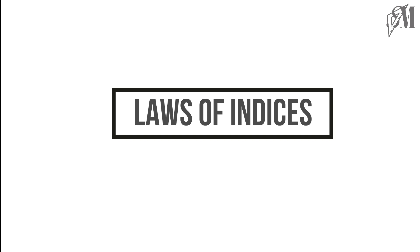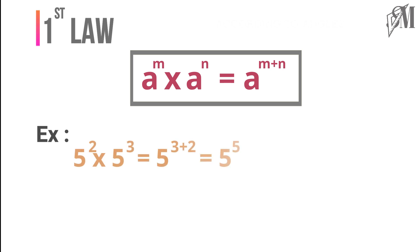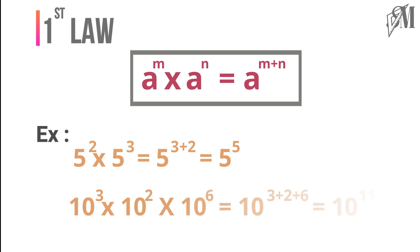The first law says the product of powers with the same base is equal to the same base raised to the sum of indices. That is, 5² × 5³ = 5^(3+2) = 5⁵. Similarly, 10³ × 10² × 10⁶ = 10^11, where 11 is the sum of 3, 2, and 6.